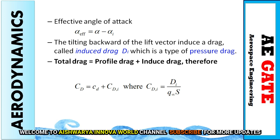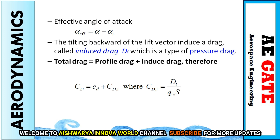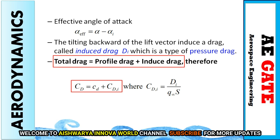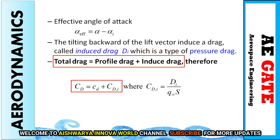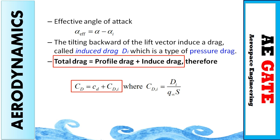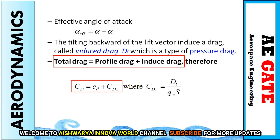Induced drag is a type of pressure drag. The total drag equals profile drag plus induced drag: C_D = c_d + C_Di, where C_Di represents D_i divided by half rho v-squared times S. The term half rho v-squared times S can also be called dynamic pressure, denoted as q-infinity.